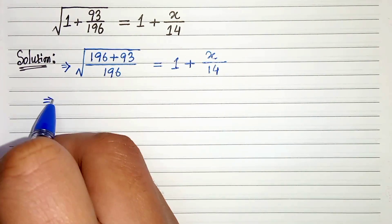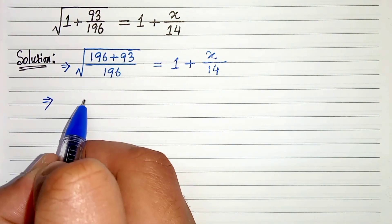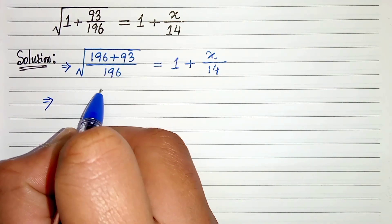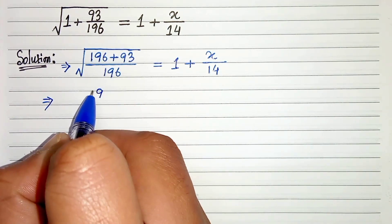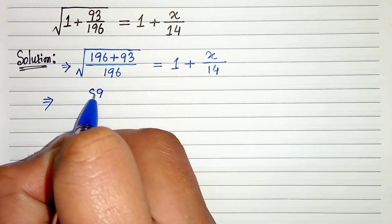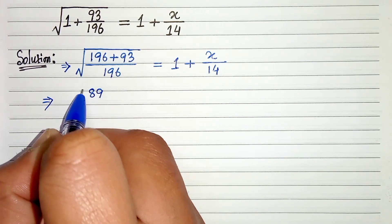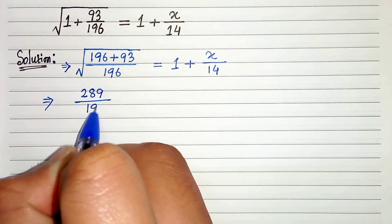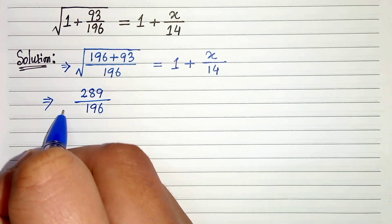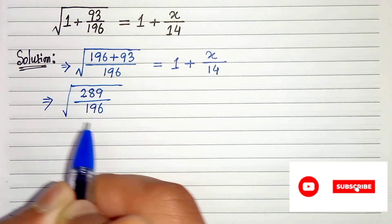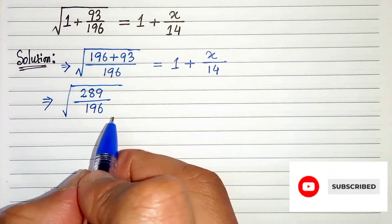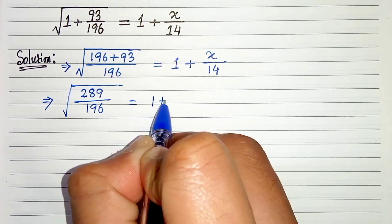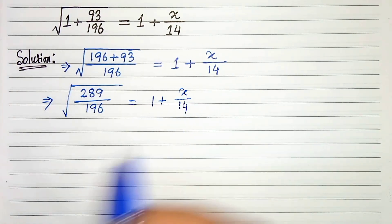In the next step, 196 plus 93: 6 plus 3 is 9, 9 plus 9 is 18, plus 1 plus 1 is 289. So root under 289 divided by 196 is equals to 1 plus x by 14.